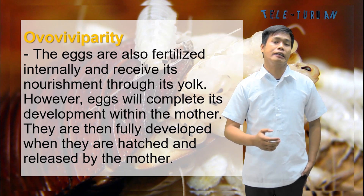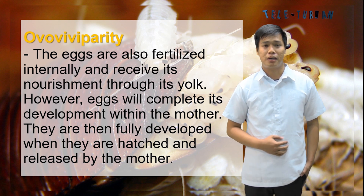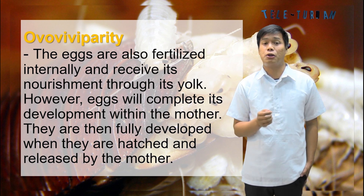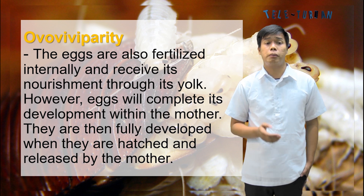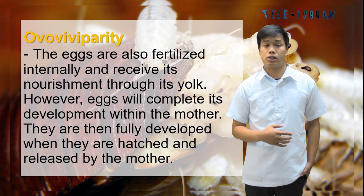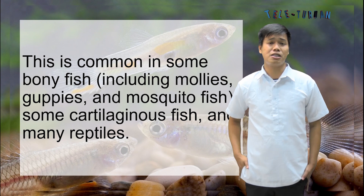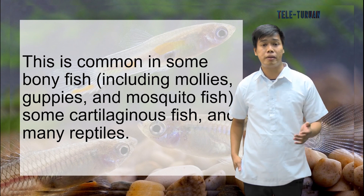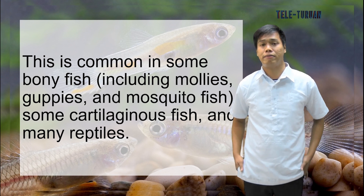Another way of internal fertilization is ovoviviparity. In ovoviviparity, the eggs are also fertilized internally and receive nourishment through their yolk. However, the eggs complete their development within the mother. They are fully developed when they are hatched and released by the mother. This is common in some bony fish including mollies, guppies, and mosquito fish, some cartilaginous species, and many reptiles.